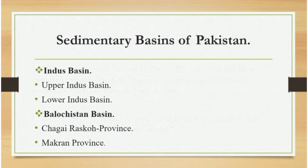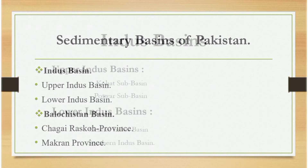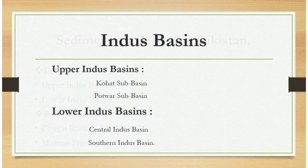There are two main basins in Pakistan: Indus Basin and Baluchistan Basin. These basins are further divided into sub-basins.